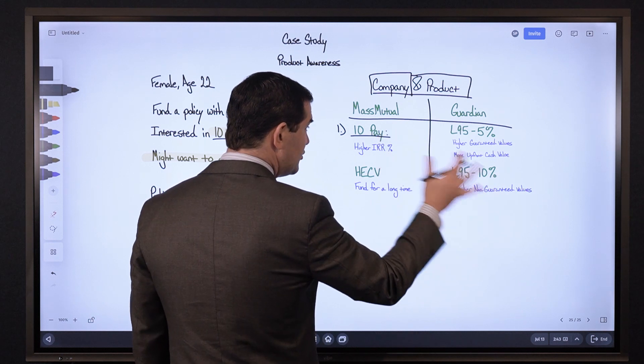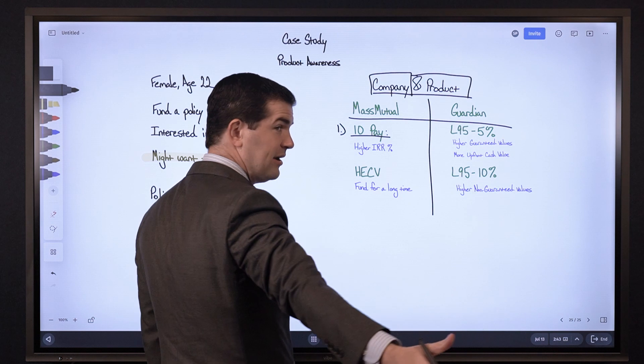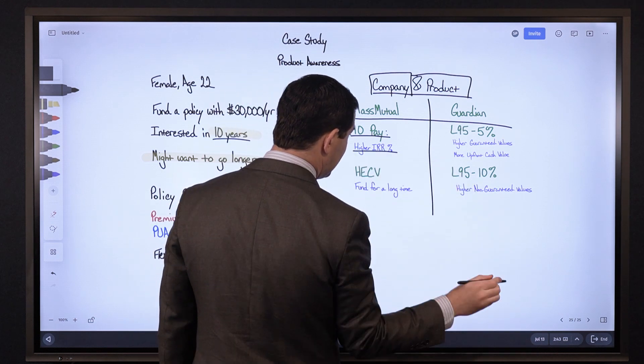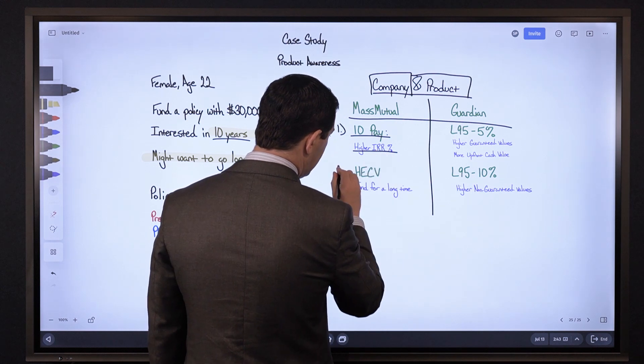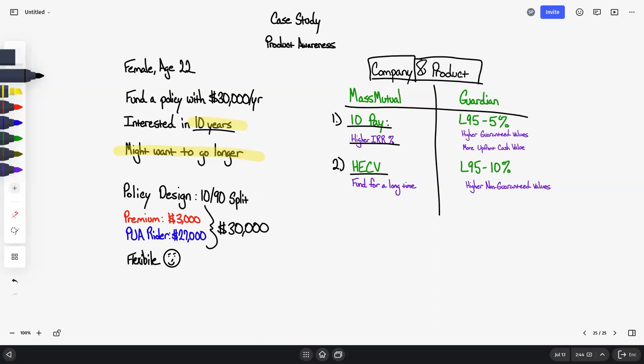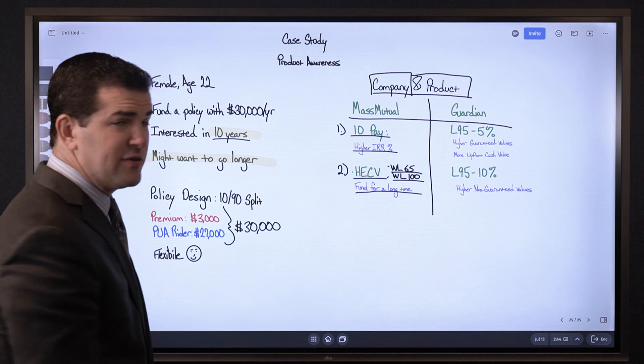A potential disadvantage to some people is that I can only pay into it for 10 years. An advantage on the other hand is when I look at the internal rate of return, the performance, it will be higher than any other product with MassMutual. If she says she thinks she does want to go longer than 10 years and wants to fund for a long time, might not even know when she wants to stop, just give her the option to keep pumping money into it, I would look at their high early cash value product. There's others they also have, their whole life 65, their whole life 100, but that high early cash value when we're looking at the non-guaranteed side based on the present dividend rate will give more upfront and long-term than those two options.